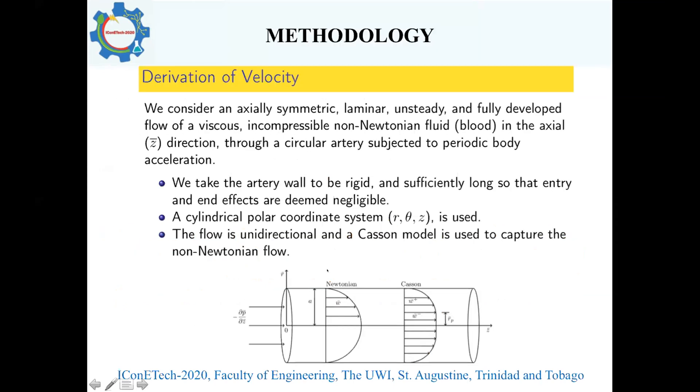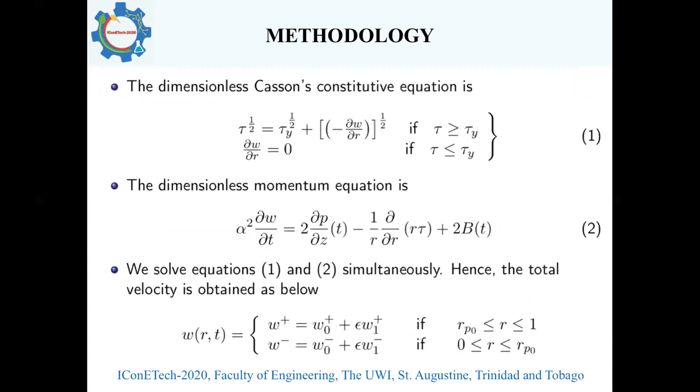Our methodology considers an axially symmetric laminar setting for the developed flow of viscous incompressible non-Newtonian fluid, in this case a Casson fluid, in the z direction through a circular artery subjected to periodic body acceleration. We assume the artery wall is rigid and sufficiently long so that entry and end effects are negligible. We employ a cylindrical polar coordinate system and the flow is unidirectional. The dimensionless Casson constitutive equation is given by equation one, and the dimensionless momentum equation by equation two. We solved equations one and two simultaneously to obtain the velocity distribution.